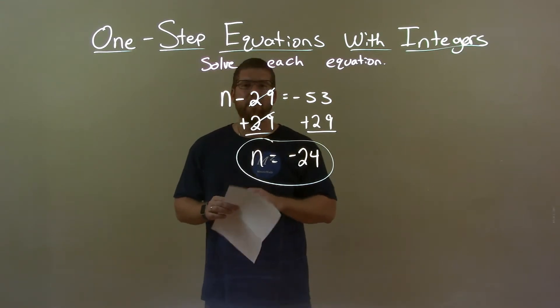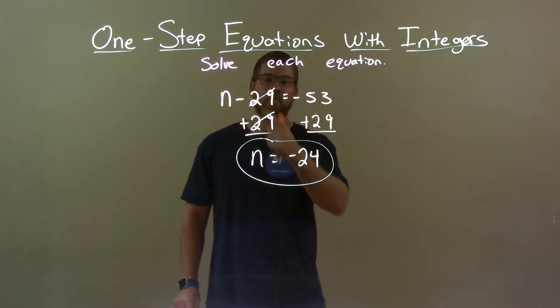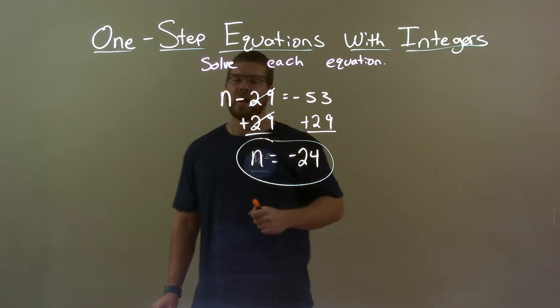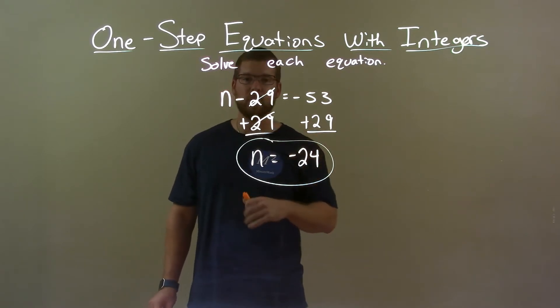Quick recap, we're given n minus 29 equals a negative 53, and we have to solve for n. I add 29 to both sides. That got me n by itself. Negative 53 plus 29 is a negative 24. So again, final answer, n equals a negative 24.